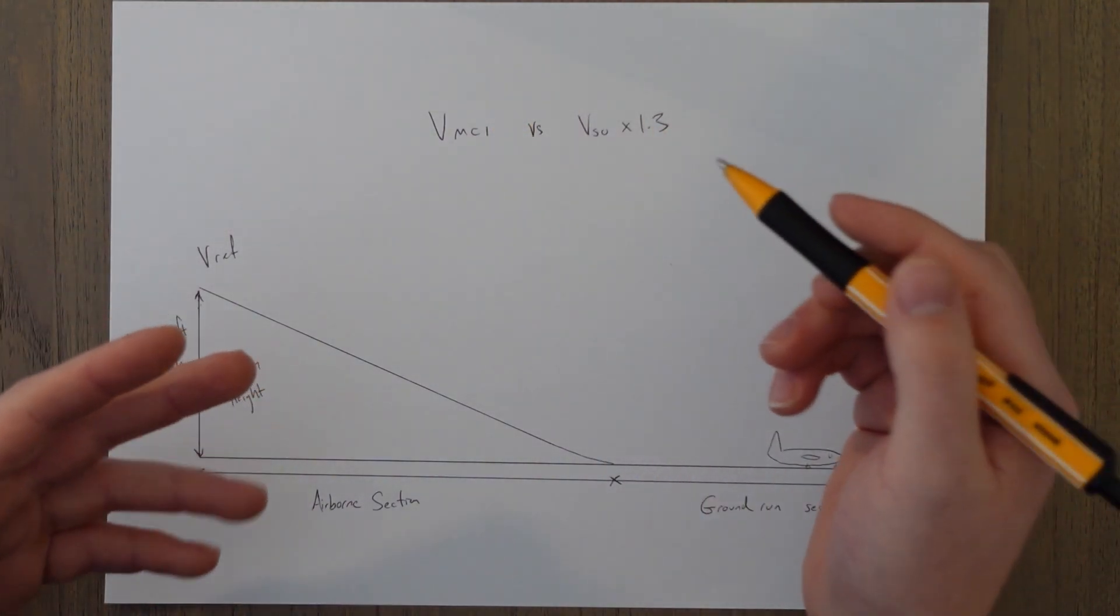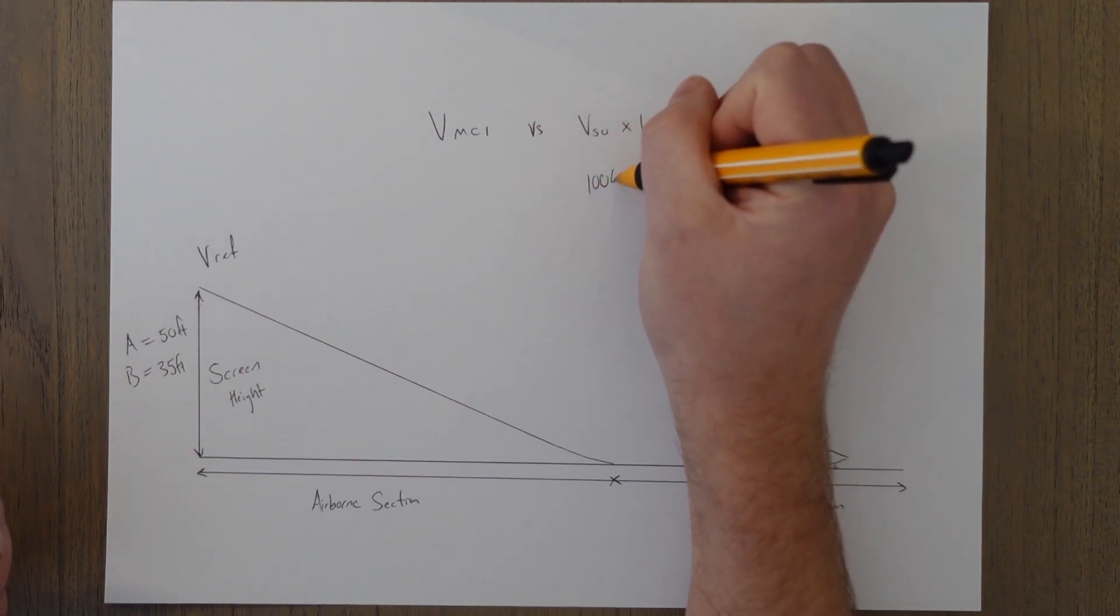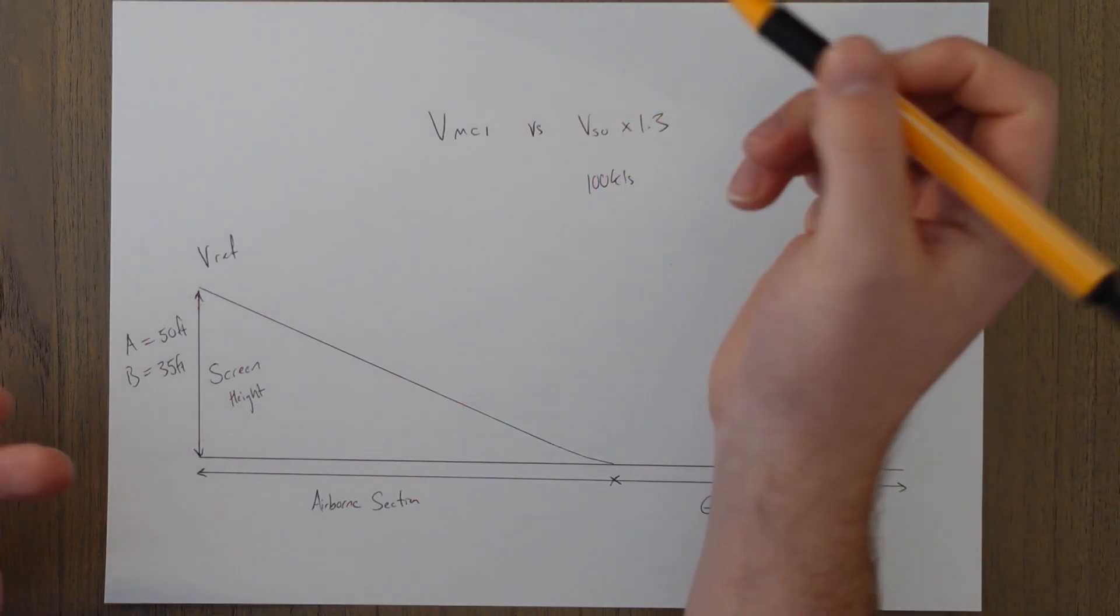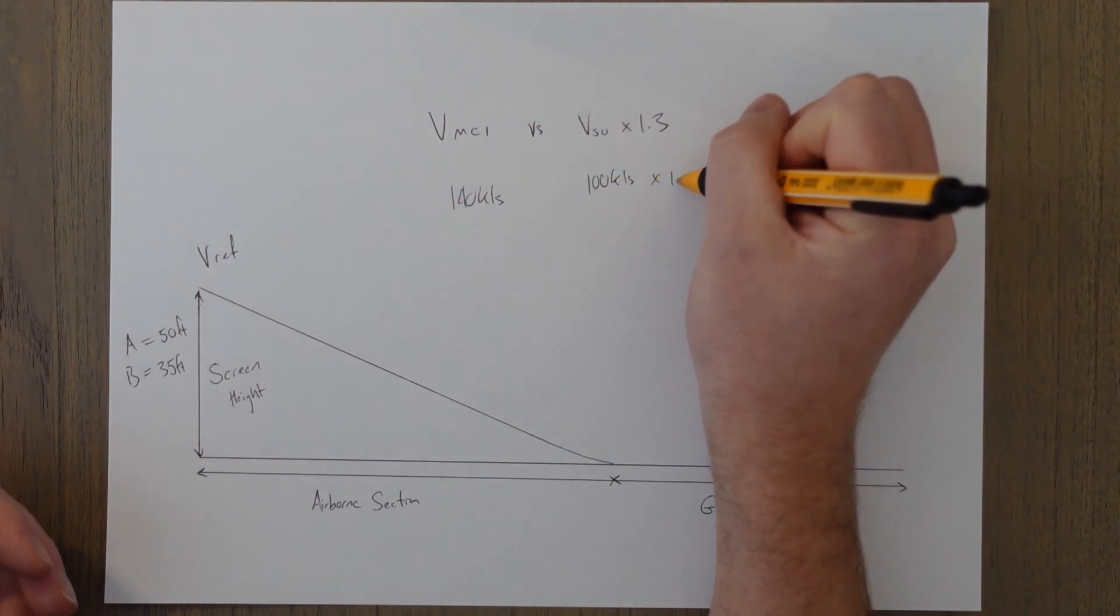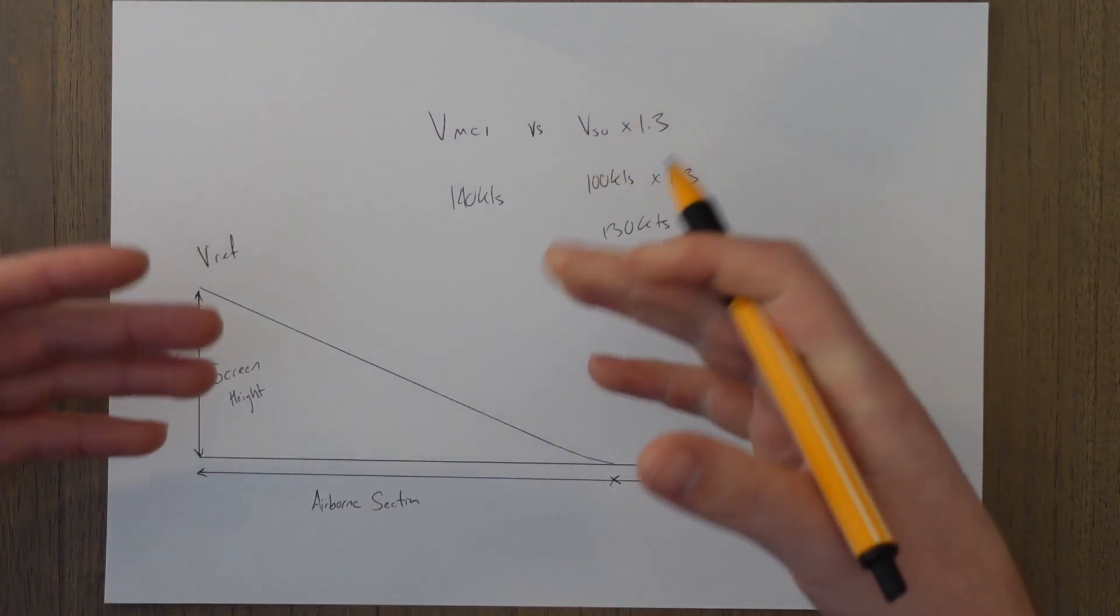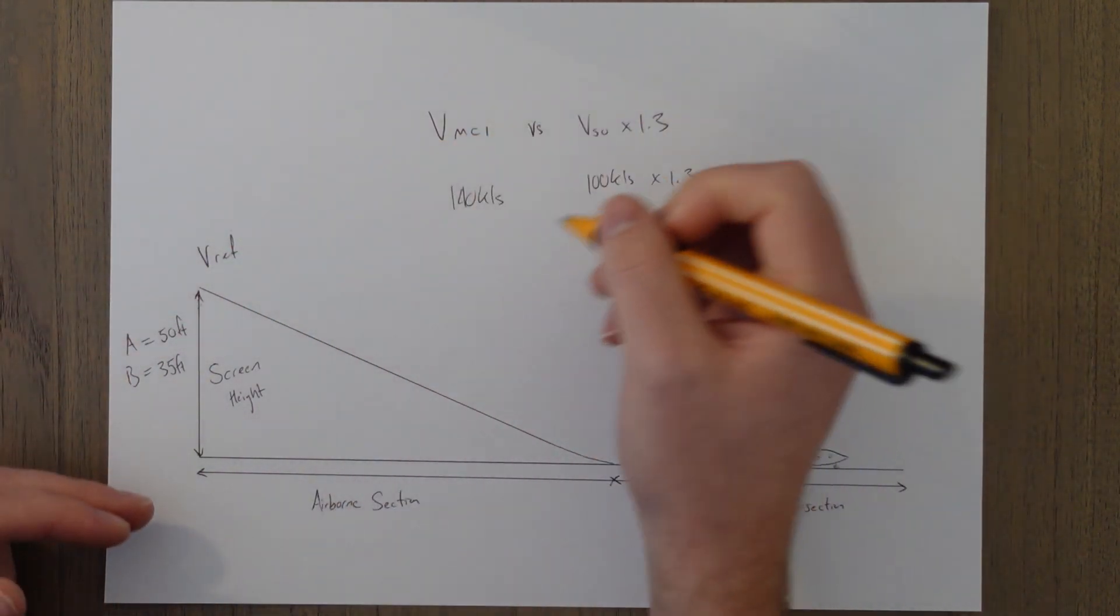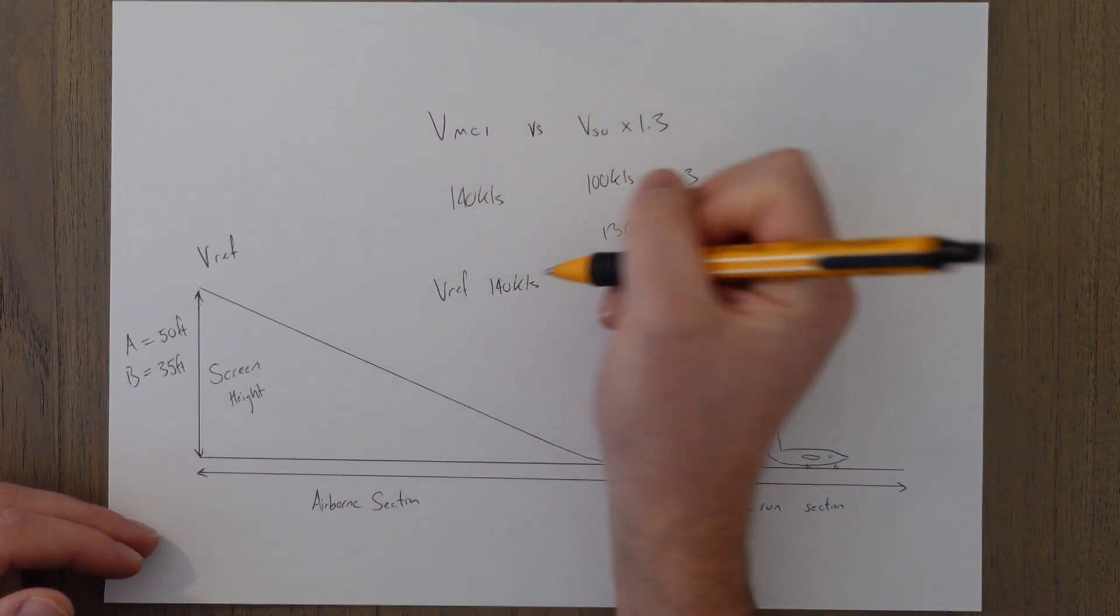So if we had an aircraft with a VS0 of 100 knots and a VMCL of 140 knots, then we multiply that by 1.3 we get 130 knots and we use the higher of the two speeds so our V ref in this occasion would be 140 knots. Simple as that.